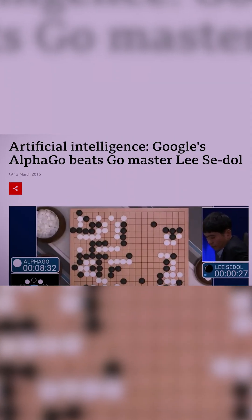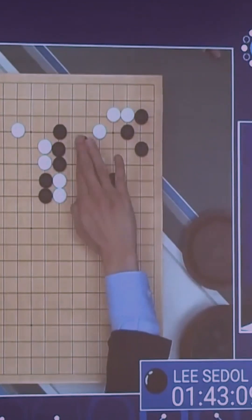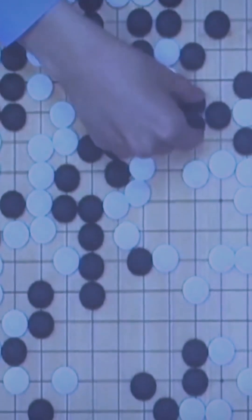In 2016, a machine taught itself to play the ancient game of Go. It made a move, move 37, that no human ever would.